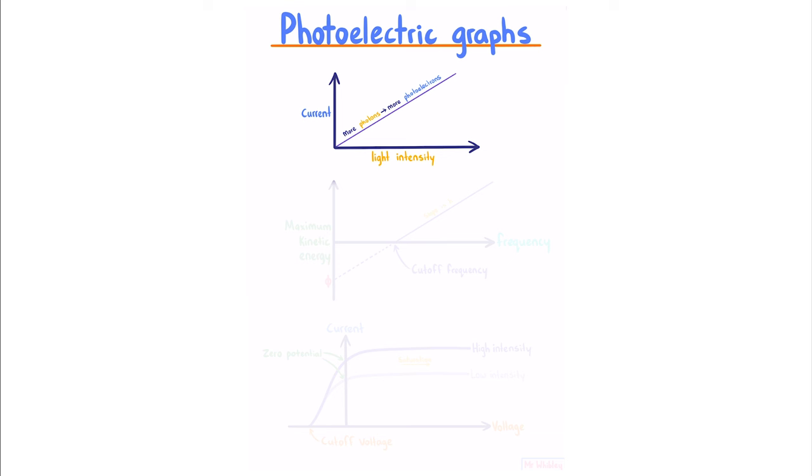Plotting our frequency versus our maximum kinetic energy, we see that below a cutoff frequency, our kinetic energy is negative, meaning there is no emission. In order to eject electrons, the minimum energy we must provide is the work function of the metal.